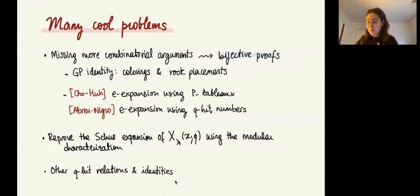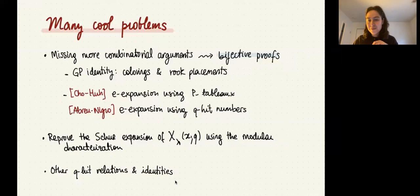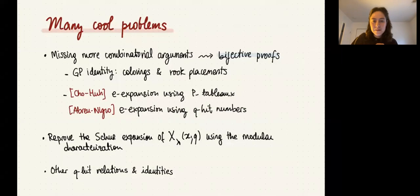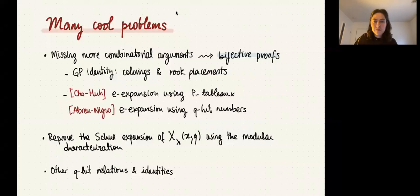The speaker noted this is a topic where there is a lot of communication needed between the algebraic and combinatorial communities. When reading papers on the Hessenberg varieties approach, she gets completely lost, and researchers in that area are also lost reading combinatorics papers, so bridging that gap would be amazing. The session chair thanked the speaker and invited further discussion at the virtual coffee break, with the next contributed talk resuming at 3:50.